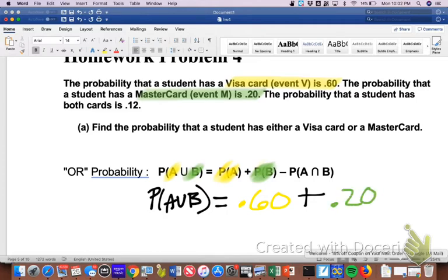And then I need to subtract the probability of both A and B, which was given to me right here. So I've got to do 0.60 plus 0.20 minus 0.12. If I do all of that, I end up with the probability of 0.68.